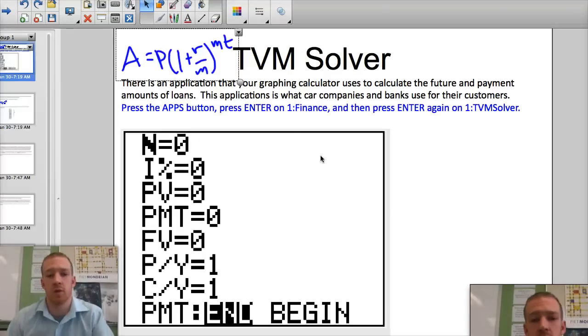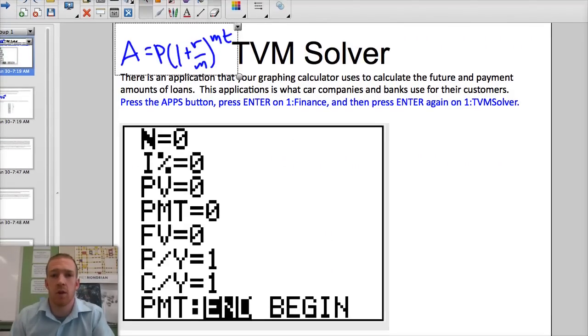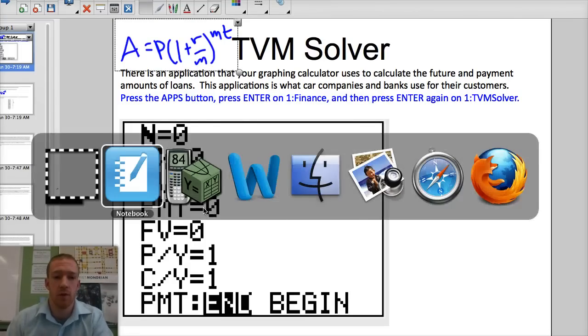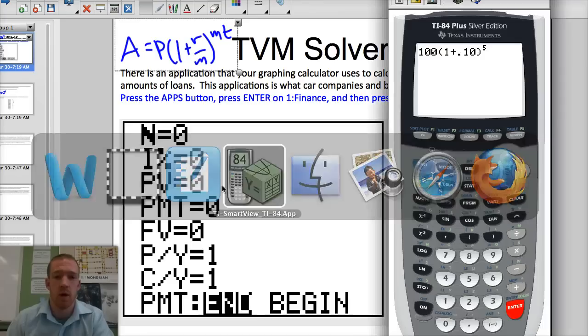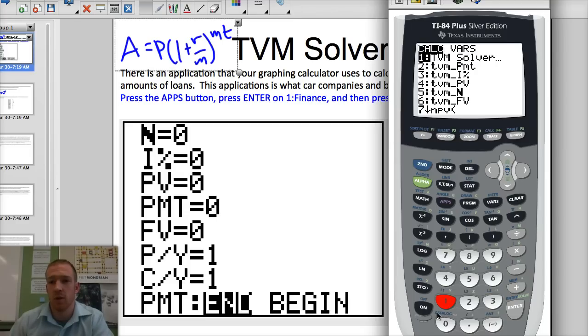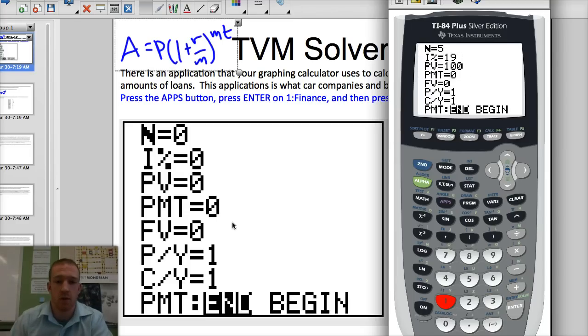All right, so this is about the TVM solver. This is a calculator application that we're going to use throughout the rest of this chapter. You just get it by going to apps here, then finance, first option. You hit that, and then your first option is TVM solver, and that's what you hit. It gives you this screen, which looks very similar to this.